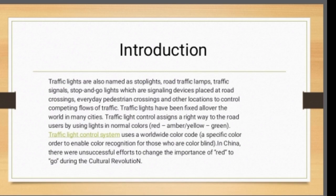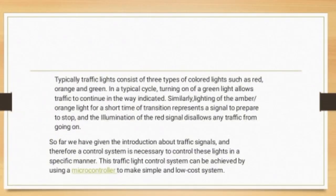The traffic light control system uses a worldwide color code and a specific color order to enable color recognition for those who are color blind. In China, there were unsuccessful efforts to change the importance of red to mean 'go' during the Cultural Revolution. A typical traffic light consists of three types of colored lights: red, orange, and green.